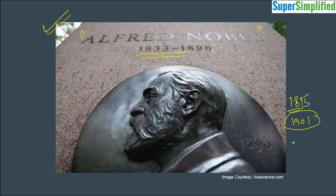Originally, they were given in five disciplines: Physics, Chemistry, Medicine, Literature, and Peace. And in the year 1968, one more discipline called Economics was added.